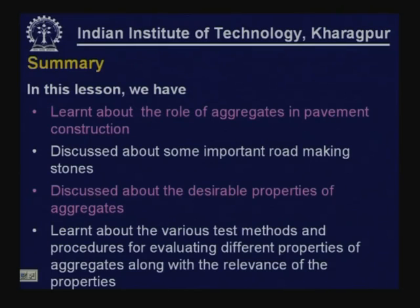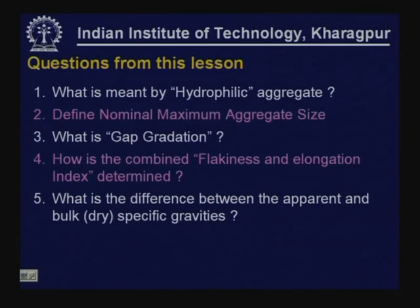To summarize, this lesson covered the role of aggregates in pavement construction, important road-making stones, desired properties of aggregates, and various test methods and procedures for evaluating different aggregate properties along with their relevance for flexible and concrete pavement performance. Review questions include: What is meant by hydrophilic aggregate? Define nominal maximum aggregate size. What is gap gradation? How is combined flakiness and elongation index determined? What is the difference between apparent and bulk dry specific gravities?